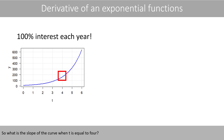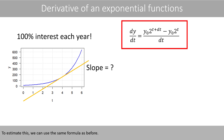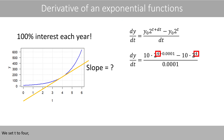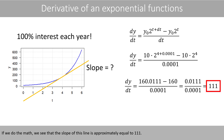So what is the slope of the curve when T is equal to 4? In other words, what is the slope of the line which just touches the curve when T is equal to 4? To estimate this, we can use the same formula as before. We set T to 4 and DT to a very small number, for example 0.0001. This means that we will calculate the slope of the line that goes through two data points on the curve when T is equal to 4 and 4.0001. If we do the math, we see that the slope of this line is approximately equal to 111.